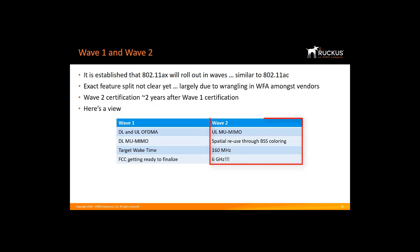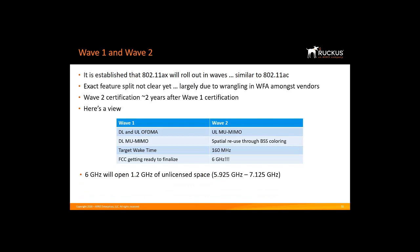Wave 2 will include uplink multi-user MIMO, spatial reuse using BSS coloring, 160 MHz, and 6 GHz. The FCC is still working on finalizing the release of the 6 GHz unlicensed spectrum. It will open up 1.2 GHz of unlicensed space in the 5.925 to 7.125 GHz range.